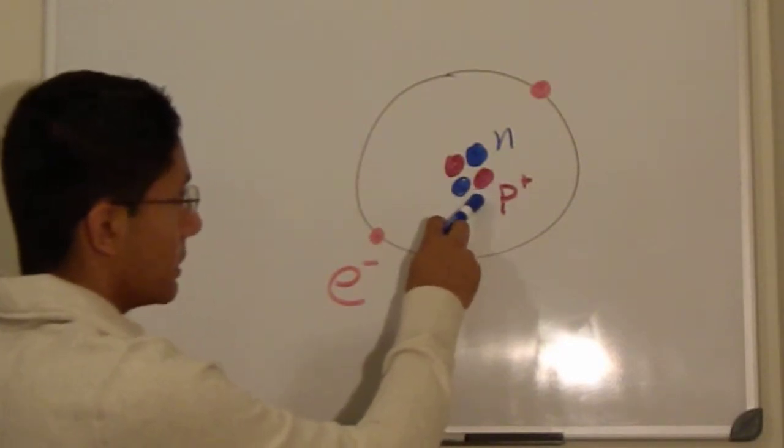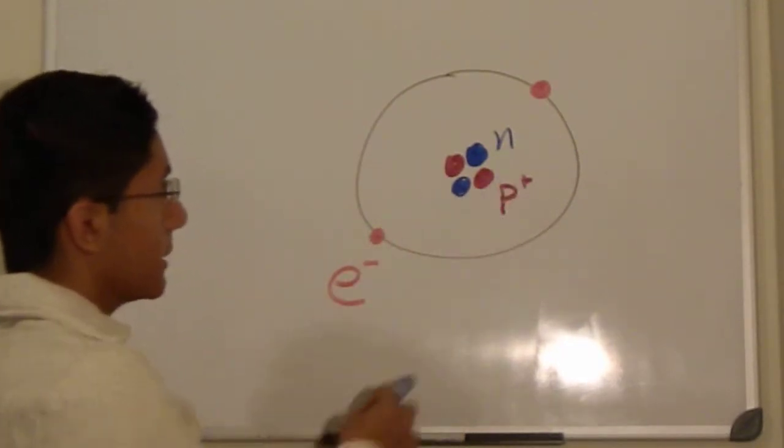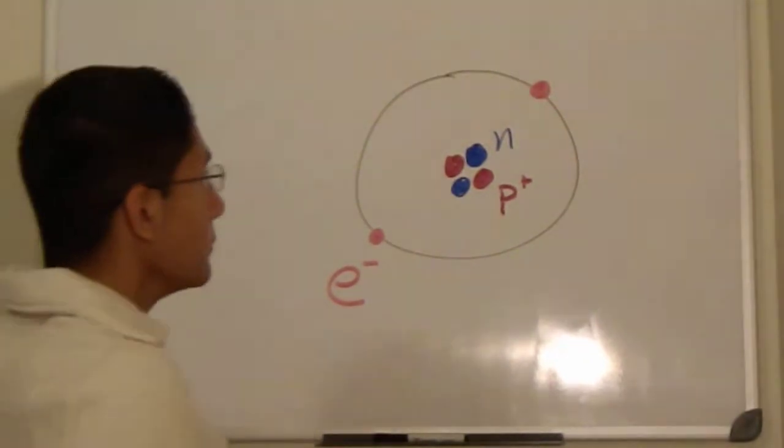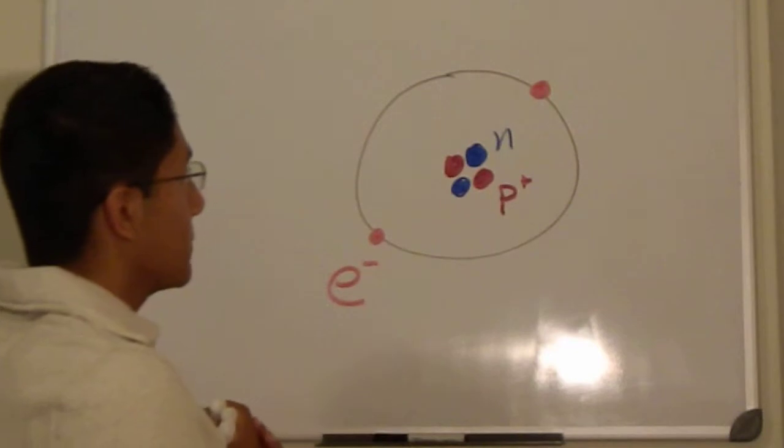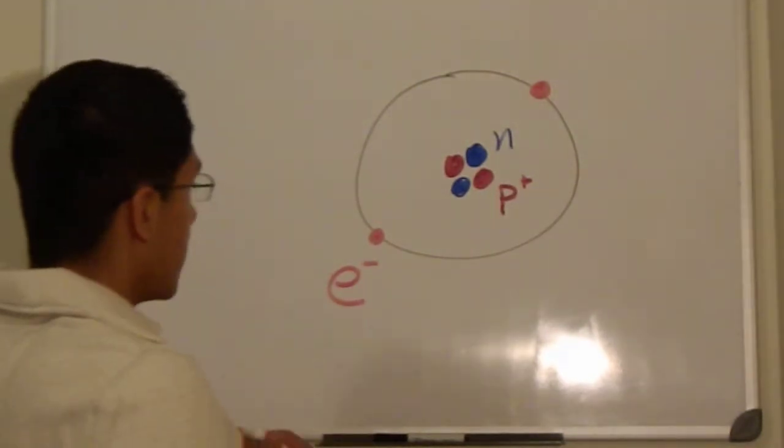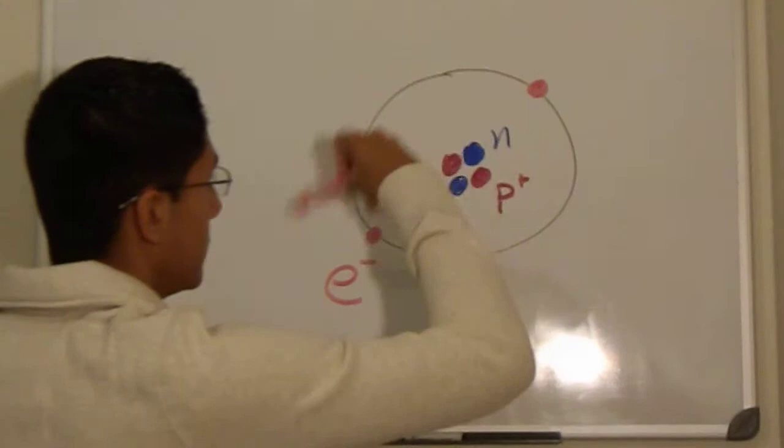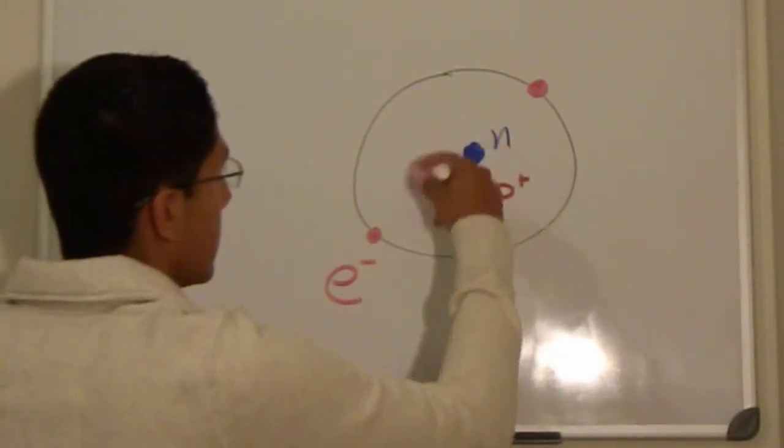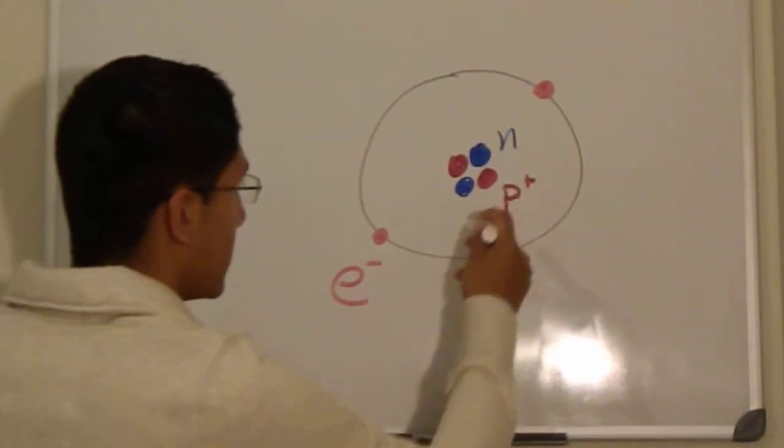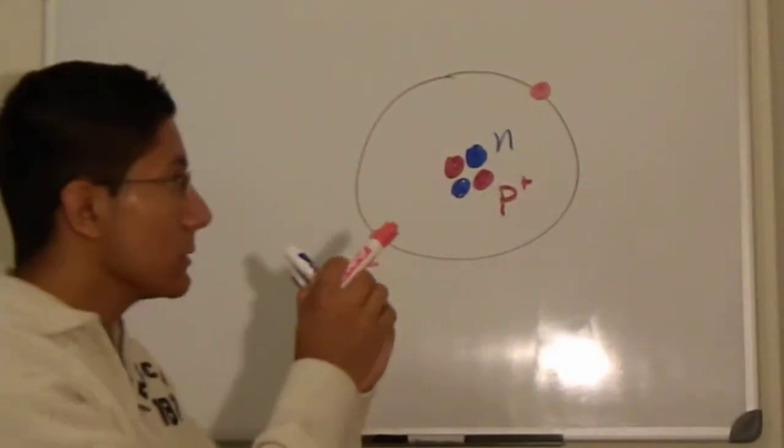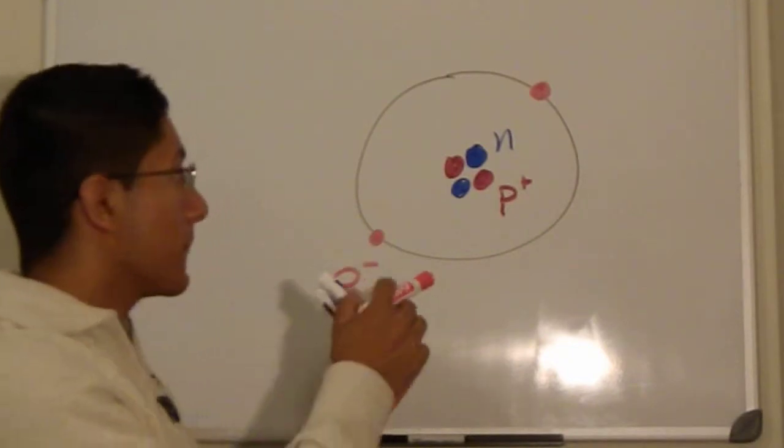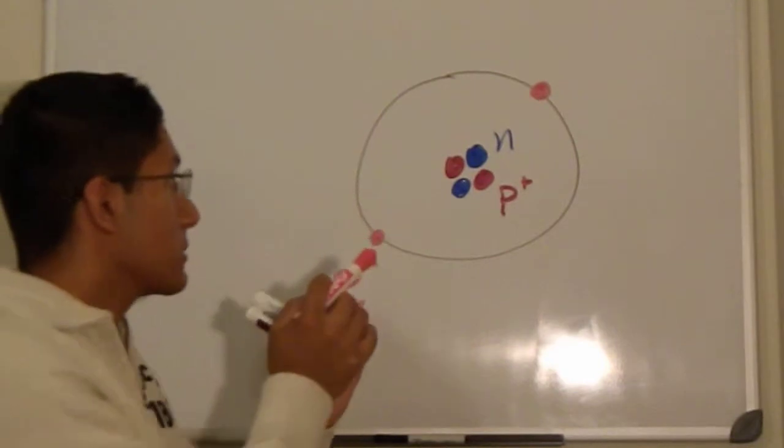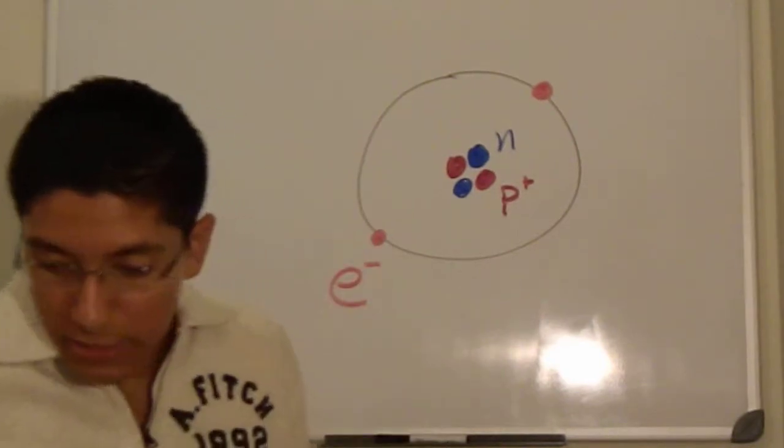And the blue are the neutrons. Now just to get you familiarized with this, these electrons spin around the nucleus. The neutrons and the protons are in the middle of the nucleus, I mean in the middle of the atom, and the electrons spin around the nucleus.